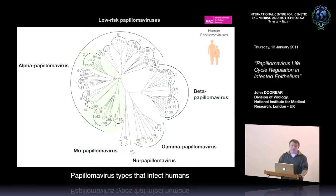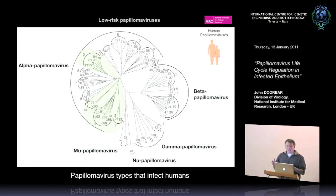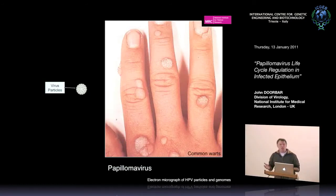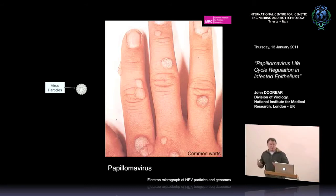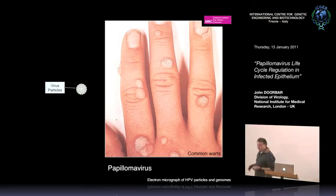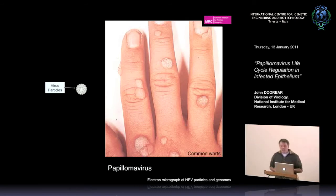Returning to the alpha papillomaviruses — not all of them are problematic. I mentioned the low-risk mucosal ones which cause genital warts and laryngeal lesions. There's a big cluster which cause just cutaneous lesions — HPV2 is probably the most prevalent and causes common warts, which nearly all children get early in life. These persist for months or years and usually regress; they are purely benign epithelial lesions. Most papillomaviruses don't cause lesions that progress to cancer — they cause benign lesions which the host immune system usually clears spontaneously.